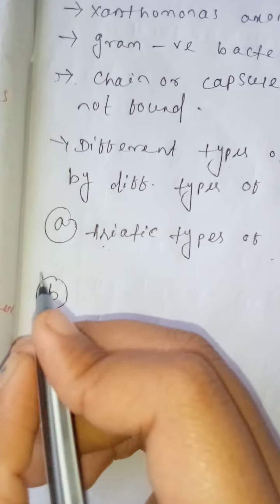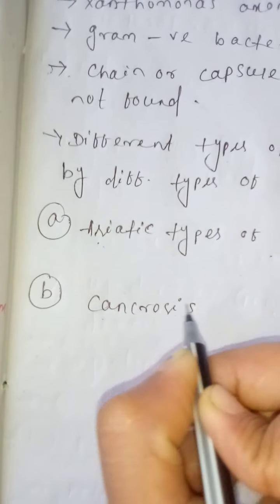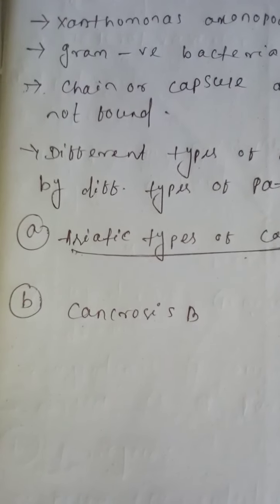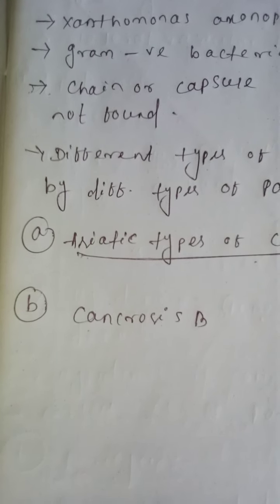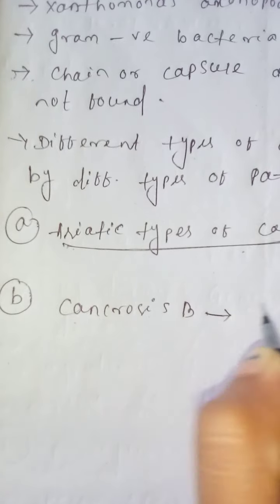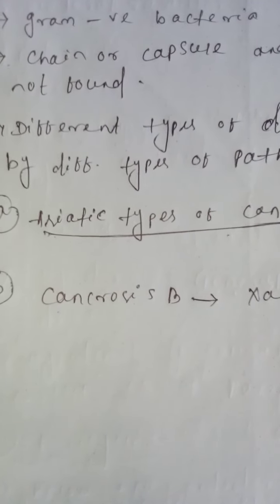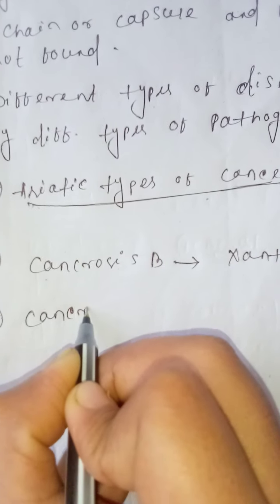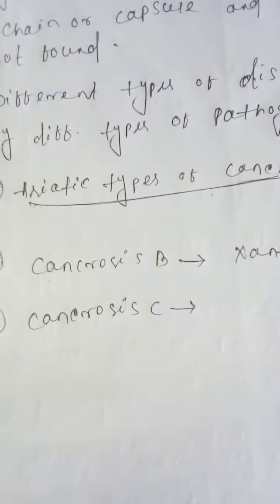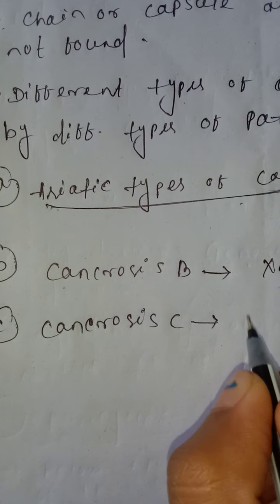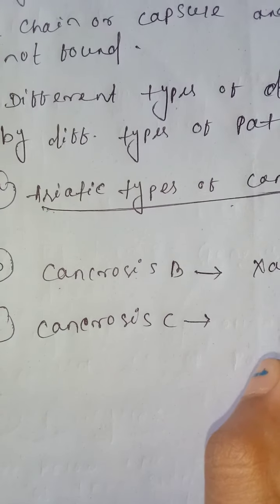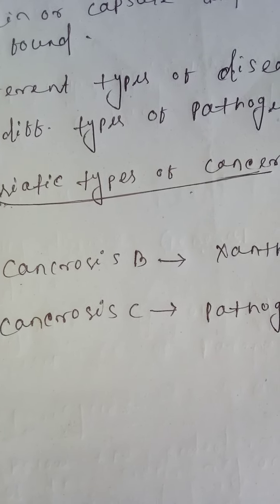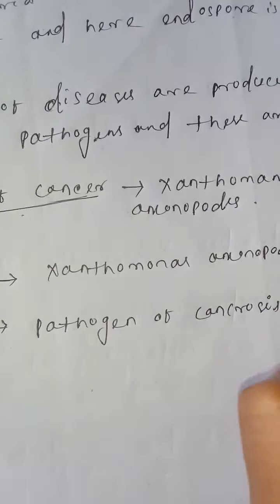The second is Cancrosis B. Cancrosis B is the type of disease which is caused by Xanthomonas axonopodis. The third is Cancrosis C. Cancrosis C is also a disease of citrus canker which is formed by the pathogen of Cancrosis B.